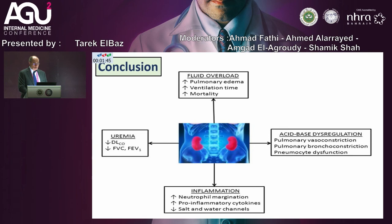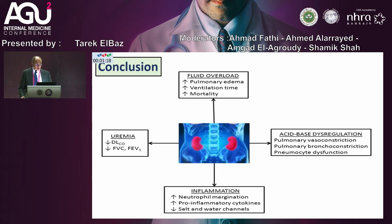In conclusion, fluid overload is a serious situation where the intensivist is forced to resort to renal replacement therapy to manage it. The uremic toxins are highly injurious to all vessels of the body, particularly the lung, with associated inflammation and DAMPs. All of these factors — fluid overload, uremic toxins, inflammatory mediators — have to be tackled together.